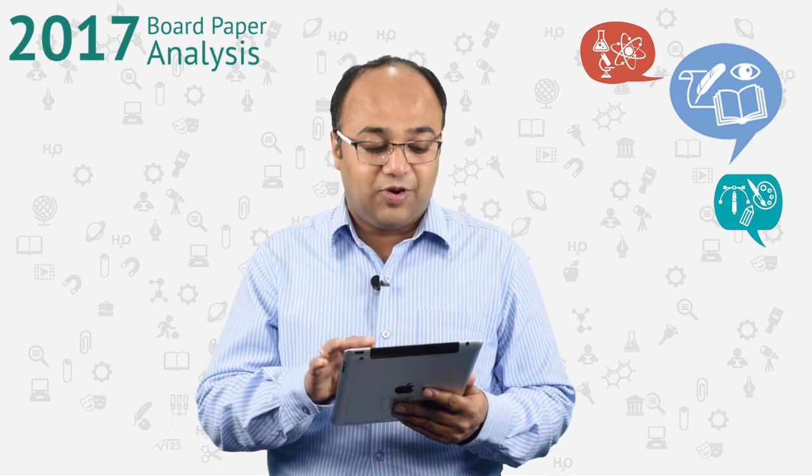Another Section B question says: 'Plenty of algal bloom is observed in a pond in your locality. What can be the reason for this algal bloom and how can we prevent it?' This is about eutrophication of water bodies — just explain it in a bit of detail, remembering it is a 2-mark question, so restrict your words.